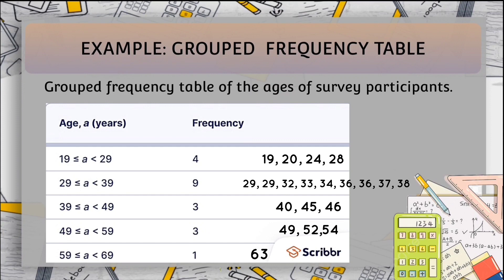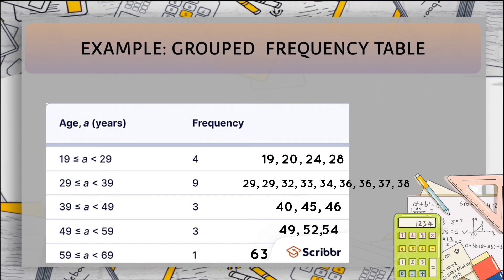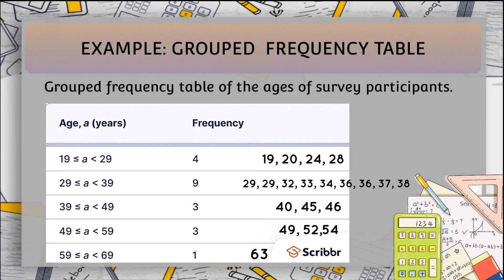So here is the grouped frequency table of the ages of the survey participants. For age greater than or equal to 19 and less than 29, we have a frequency of 4. For age greater than or equal to 29 and less than 39, we have a frequency of 9. For age greater than or equal to 39 and less than 49, we have 3. And lastly, for age greater than or equal to 59 and less than 69, we have 1.